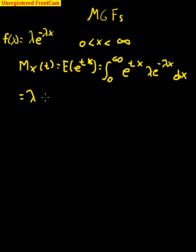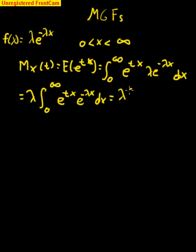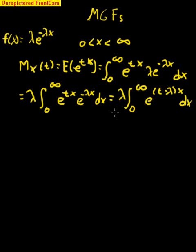Our next step is to take that lambda outside of our integration, because it's not a variable in question — it's actually more of a parameter, so we're not concerned with that. We're going to get the following, and now we can get to our final step. Don't forget we can combine these terms to simplify, and now all we have to do is integrate. This is our last simplification step, and from here we obtain our moment generating function: lambda over lambda minus t.